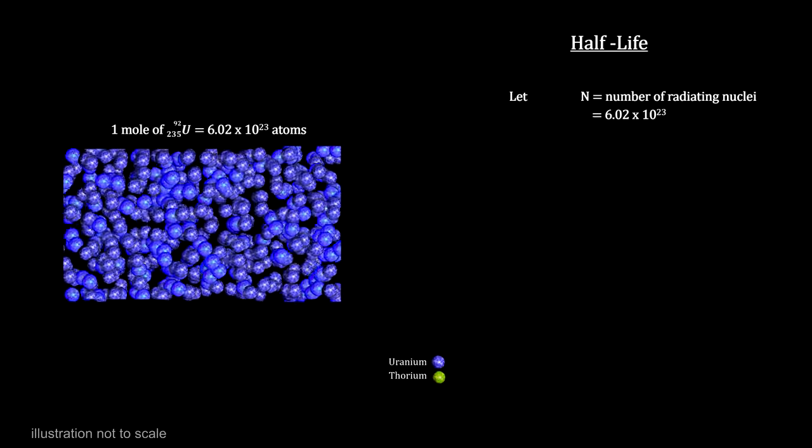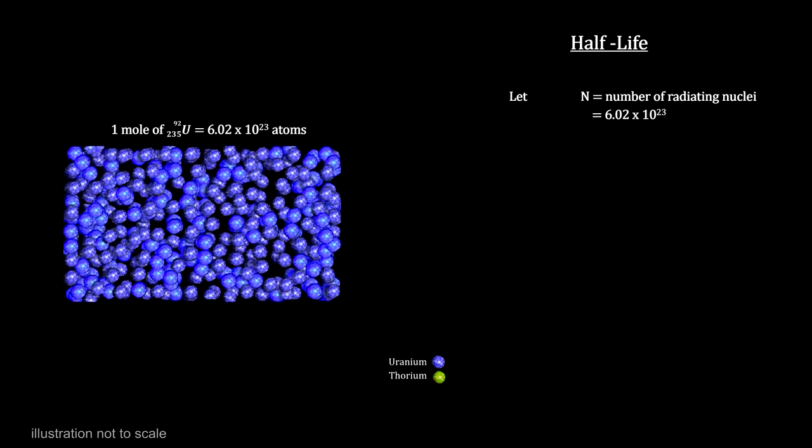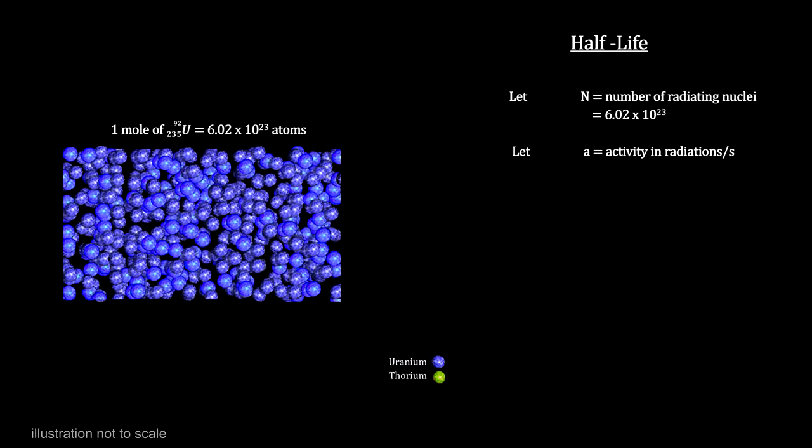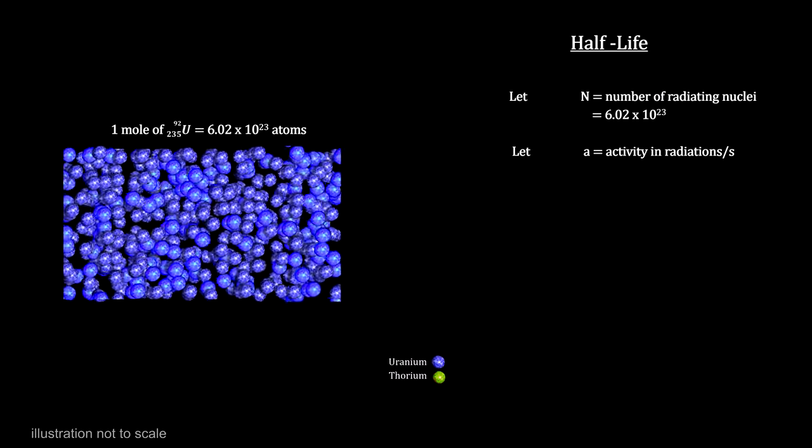Here's a measured sample of uranium-235. The rate at which unstable radioactive nuclei decay in a sample is called the activity of the sample. The greater the activity, the more nuclear decays per second.